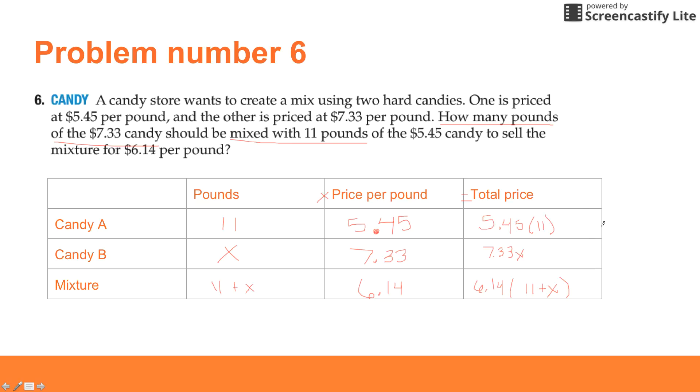When it goes to setting up your equation, you're pretty much just using this last column here. You'll say the total price of Candy A plus the total price for Candy B has to equal the total price of the mixture. I'm going to let you set up the equation and solve it, and we'll go over it tomorrow in class. Pause this if you need to get caught up, but I'm going to move on to the next question.